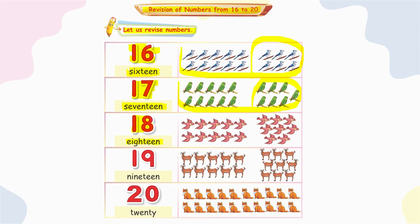19. One ten and nine ones make 19. N-I-N-E-T-E-E-N, nineteen. Here are 19 goats.